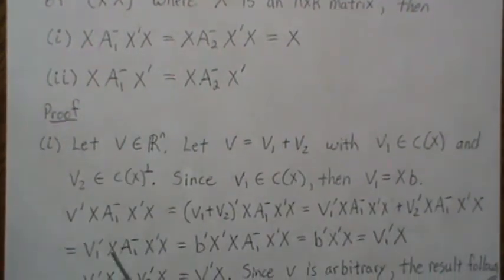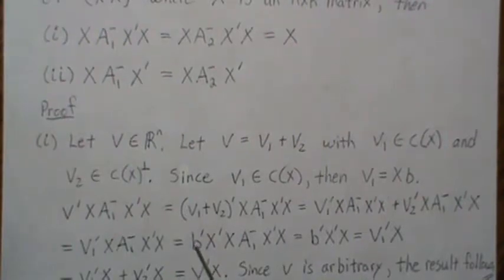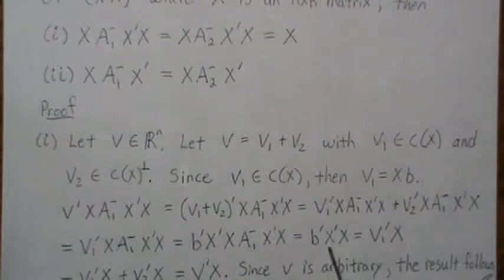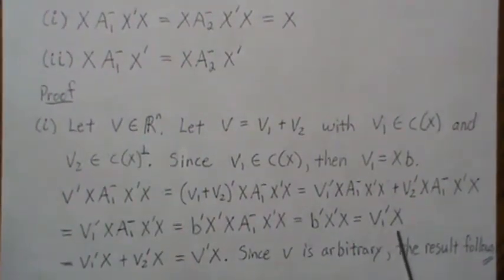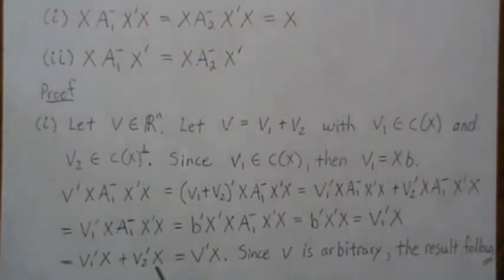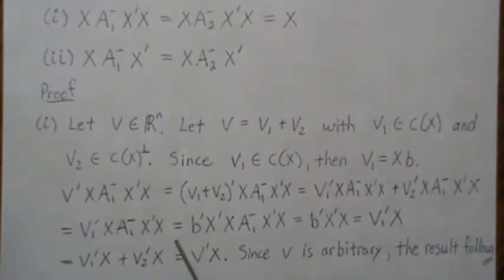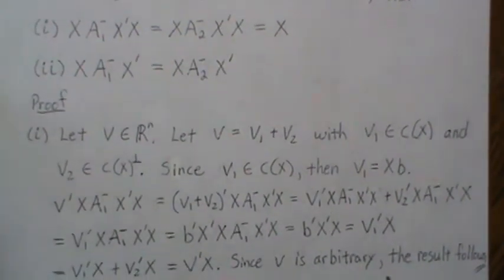Since V1 is in the column space of X, we can write V1 = X B for some vector B. Distributing the transpose, we get B' X' X A1-dash X' X. Since A1-dash is a generalized inverse of X'X, the condition gives us X'X A1-dash X'X = X'X, so this becomes B' X' X. Then B' X' is V1', and adding zero (since V2' X = 0) and factoring out X, we're left with X A1-dash X' V = X V. Since V is arbitrary, the result follows that X A1-dash X' X = X.